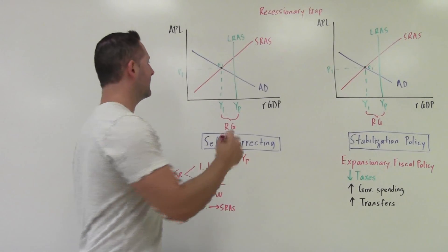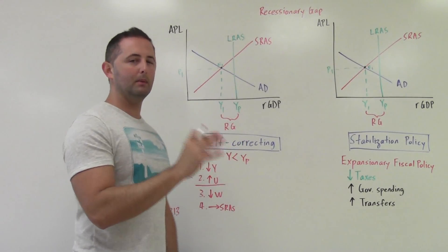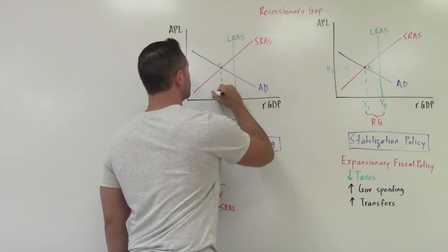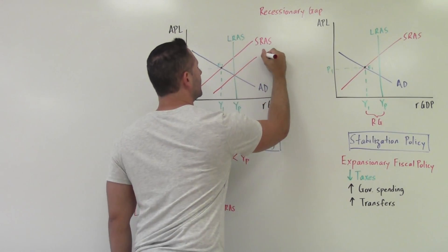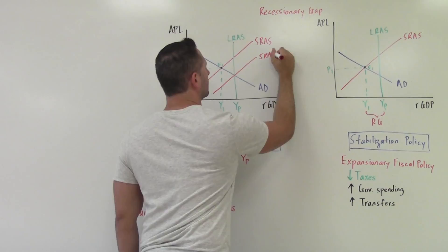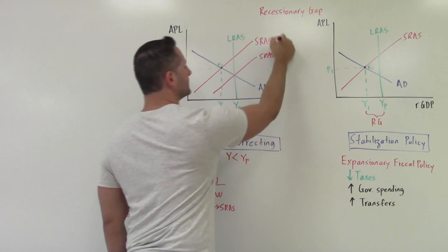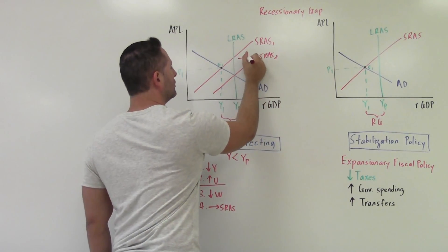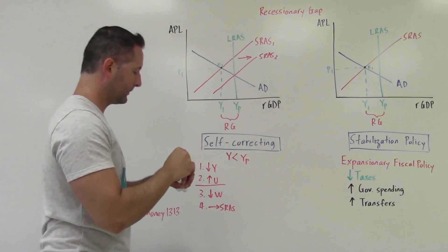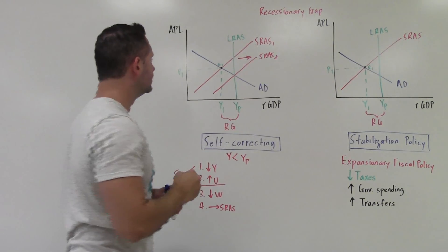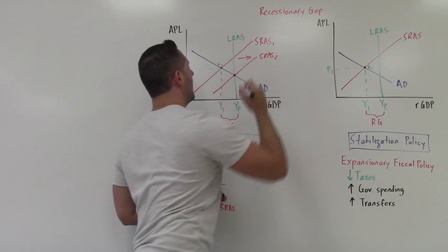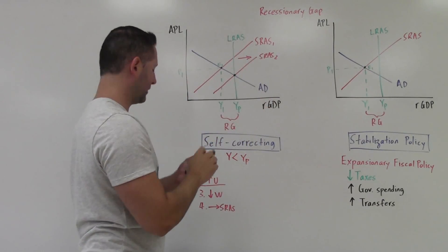So we have SRAS 1 and 2, we have a rightward shift, and now the point is that we are back on our long run equilibrium. We see that at E2, we are back to long run.